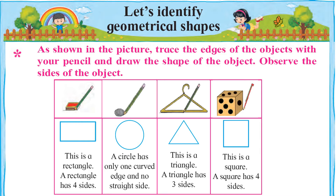A rectangle has four sides. Rectangle ko four sides hote hain yaani Mustatil ko chaar baazu hote hain. Rectangle ke four sides kaun se hain? Yeh hain rectangle ke four sides. Ab dekhte hain second picture.